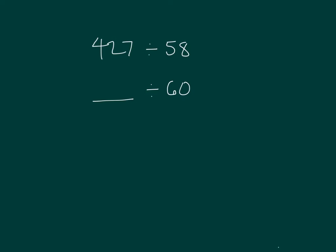Count by 60s, and we'll stop when we can find a multiple near 427: 60, 120, 180, 240, 300, 360, 420. Stop. So what should we round the whole number to? 420. So we have 420 divided by 60.